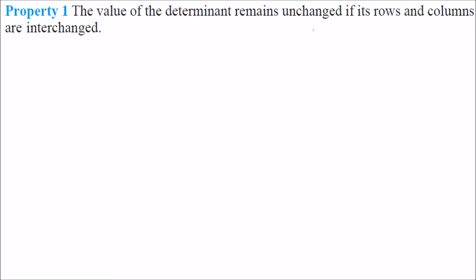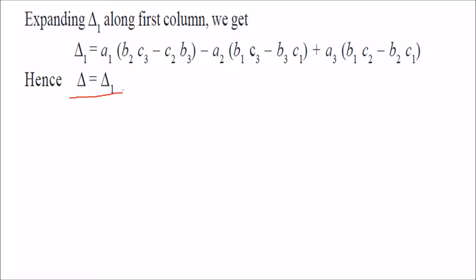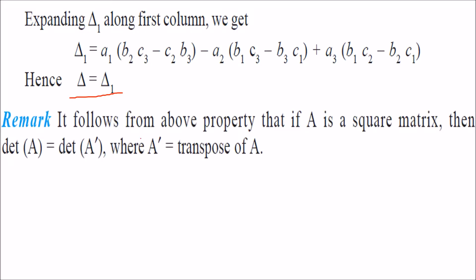Property 1: the value of a determinant remains unchanged if the rows and columns are interchanged. That means if you interchange the rows and columns — that is, change rows into columns and columns into rows — you make it the transpose. So it follows that if A is a square matrix, then determinant of A shall be equal to determinant of A-dash, that is the transpose of A.